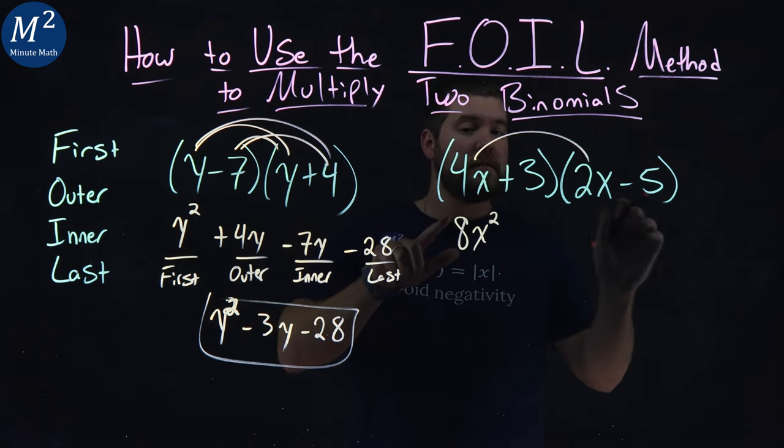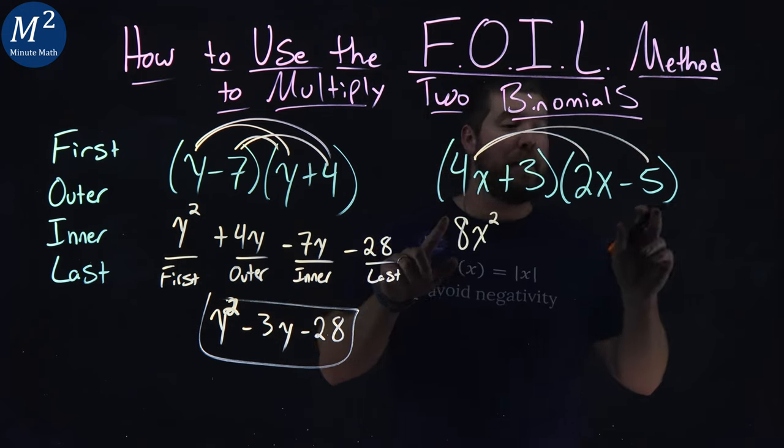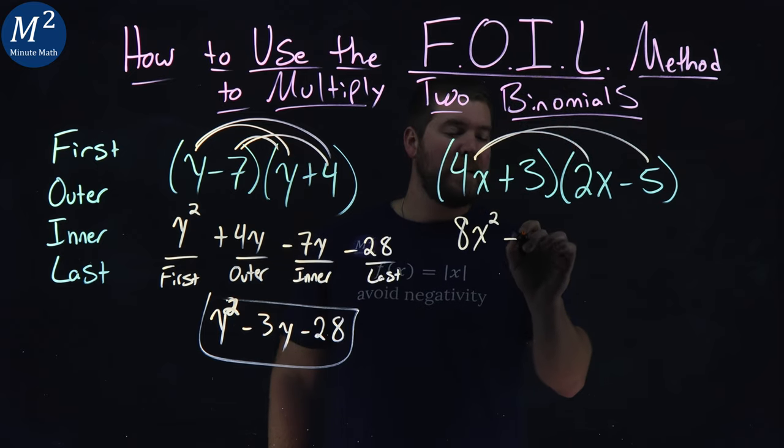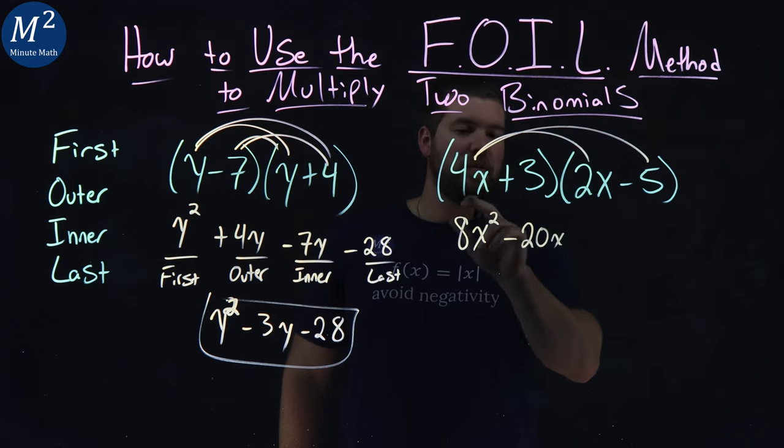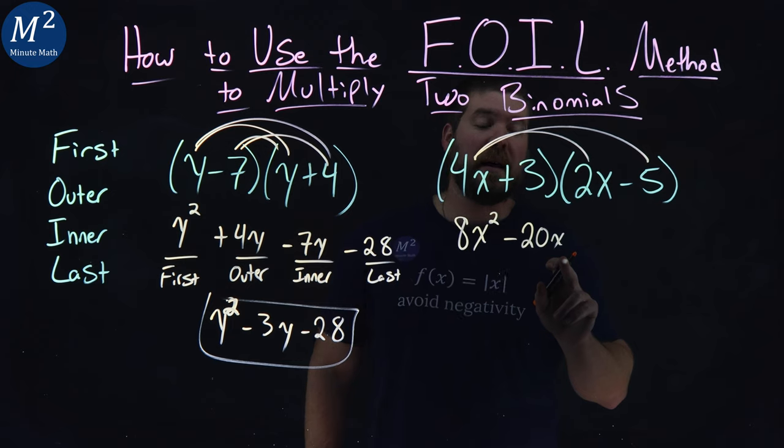Next one, the outer ones. 4x times minus 5. And that's going to be minus 20x. 4 times 5 is 20. Bring the x.